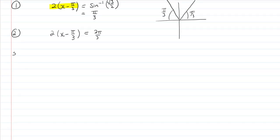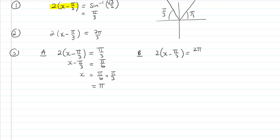Step 3, we solve and give our general solution. Solution A is 2x - π/3 equals π/3. That means x - π/3 equals π/6, and x equals π/6 + π/3, which is just equal to π/2. That's our first solution. Or b is 2x - π/3 equals 2π/3. Divide by 2, we get x - π/3 equals π/3. Add π/3, we get x equals 2π/3.